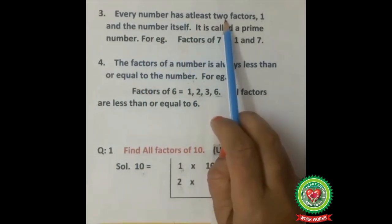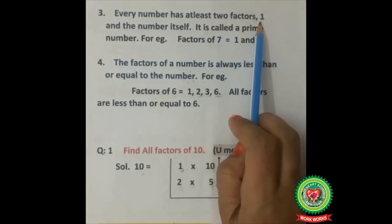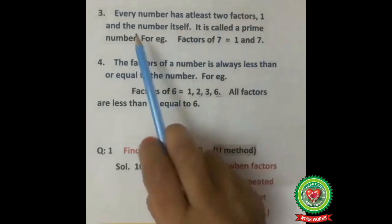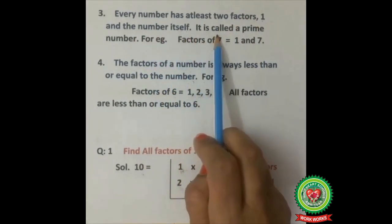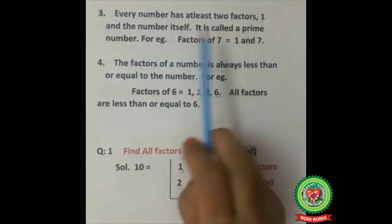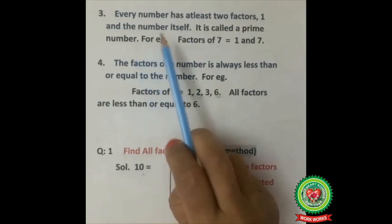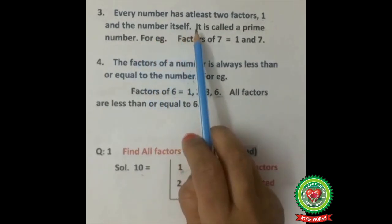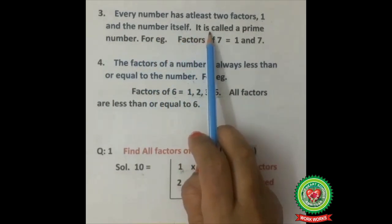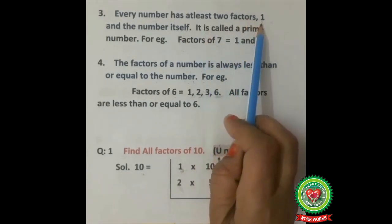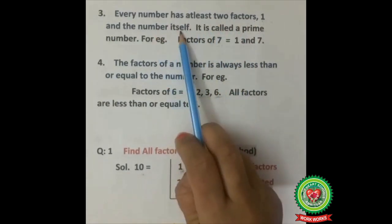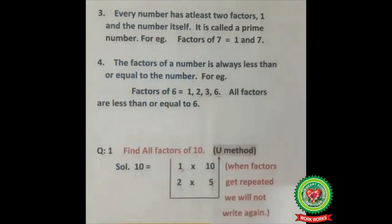Every number has at least two factors — that is, 1 and the number itself — and such a number is called a prime number. As we already discussed, prime numbers are numbers having exactly two factors: 1 and the number itself.